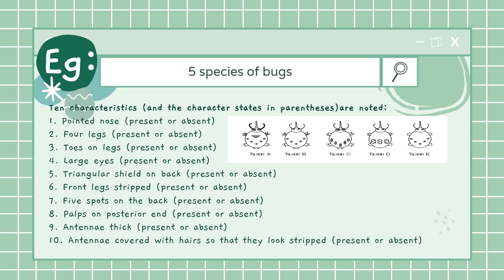For an example we're going to construct a phenogram. I have taken an example of five species of bugs - I've named them A, B, C, D and E. And I've taken 10 different character traits that we will be comparing within these five species.